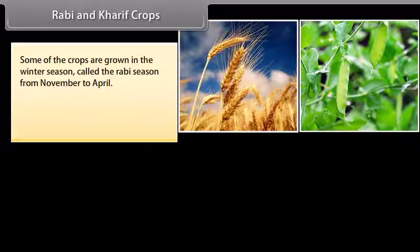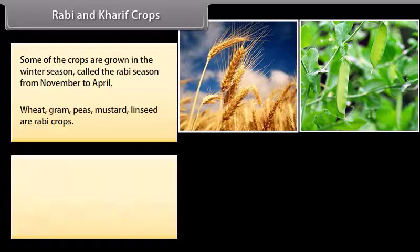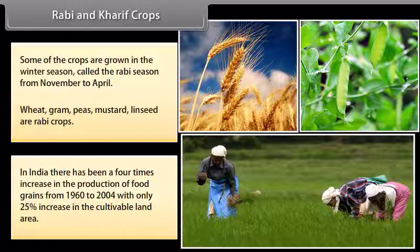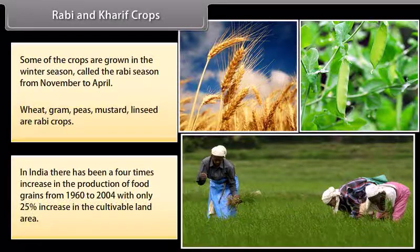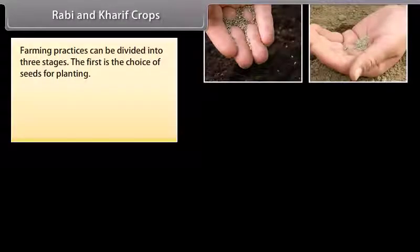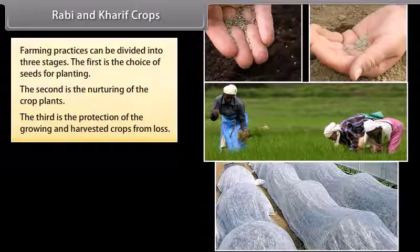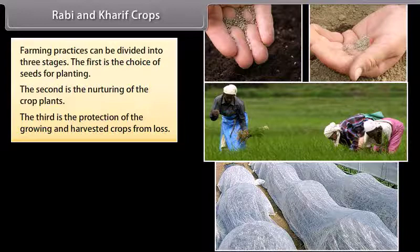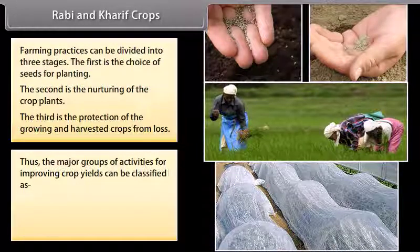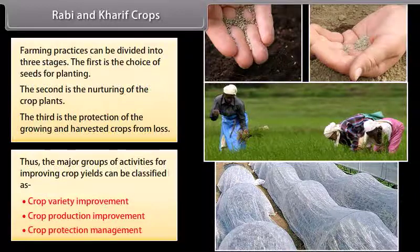Some crops are grown in the winter season, called the Rabi season, from November to April. Wheat, gram, peas, mustard and linseed are Rabi crops. In India, there has been a four times increase in food grain production from 1960 to 2004 with only 25% increase in cultivable land. The major groups of activities for improving crop yields are crop variety improvement, crop production improvement, and crop protection management.